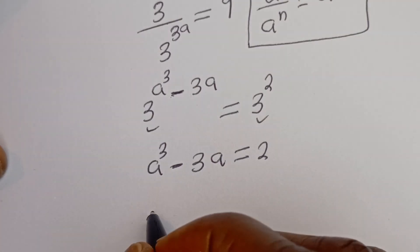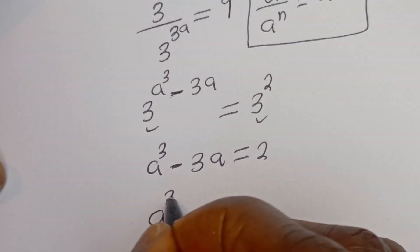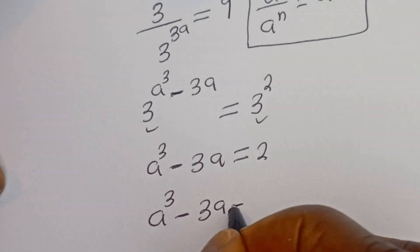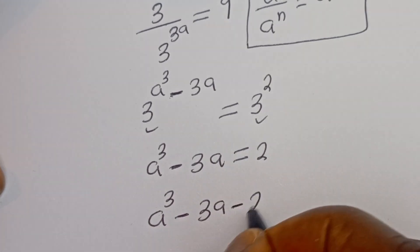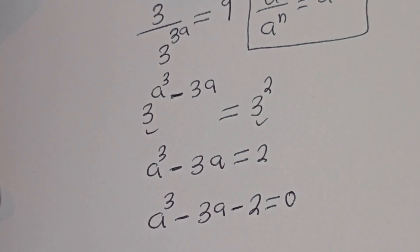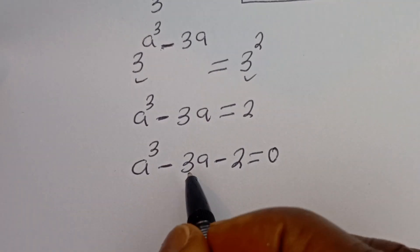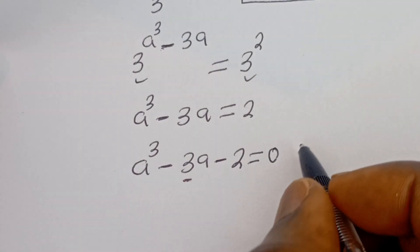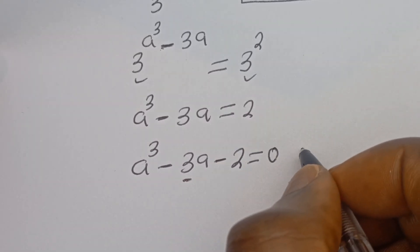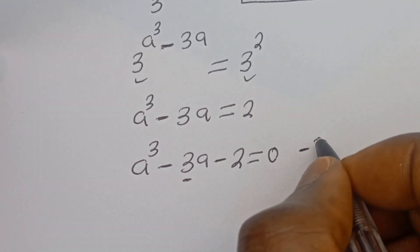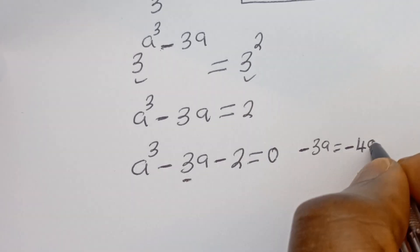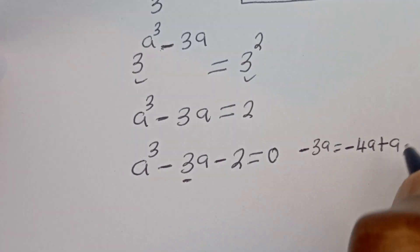So we have A to the power of 3 minus 3A equal to 2. Now let's transform this minus 3A. This minus 3A can be written as minus 4A plus A.